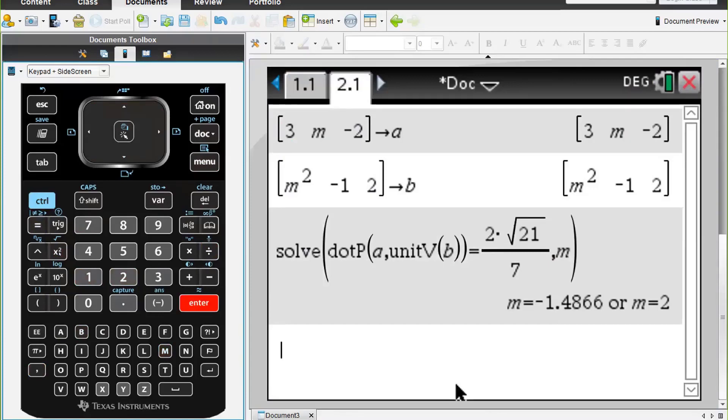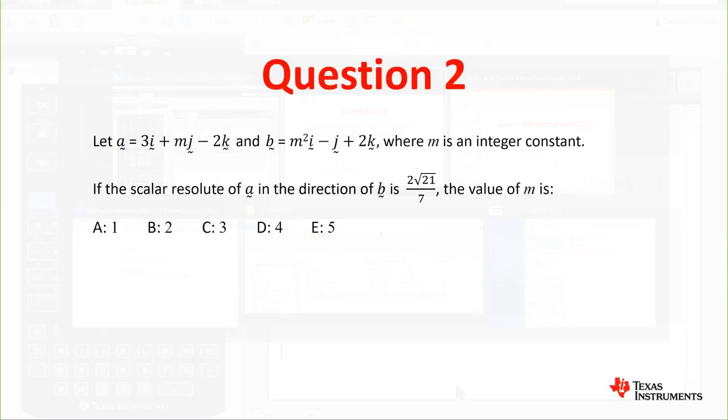Okay we get two values there, we get minus 1.486 or m equals 2. Let's go back and have a look at the question. Okay so we have to find the integer value and therefore the answer would be 2.